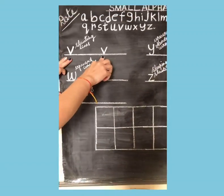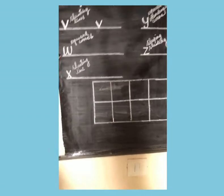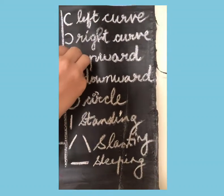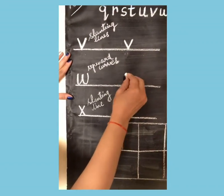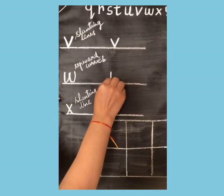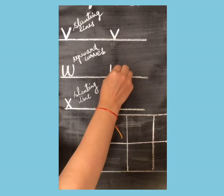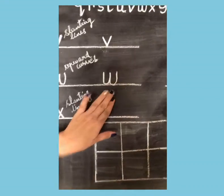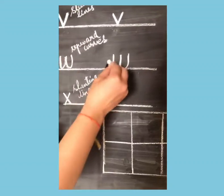To write small alphabet W, you need two upward curves. Watch me: first step, make a small upward curve, then join another upward curve to it. This becomes your small W.